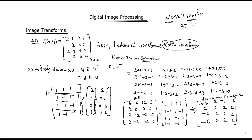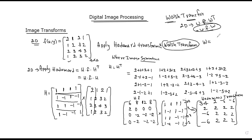The Walsh-Hadamard transform easy pointer: for 2-dimensions, F equals W times f times W transpose. If symmetric, W times f times W. Here we are going to change row 3, then row 1, then row 2, to reorder the final answer.